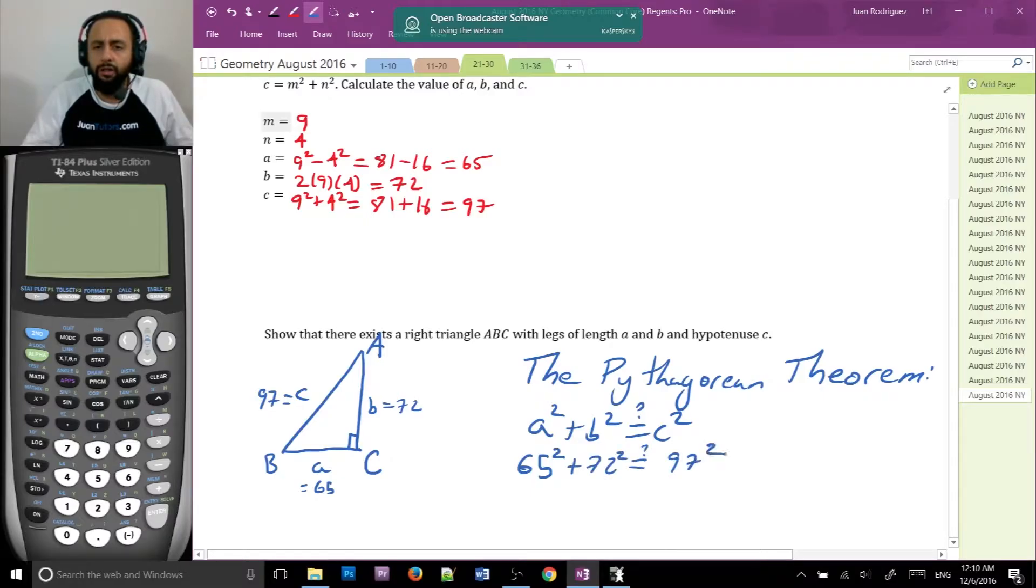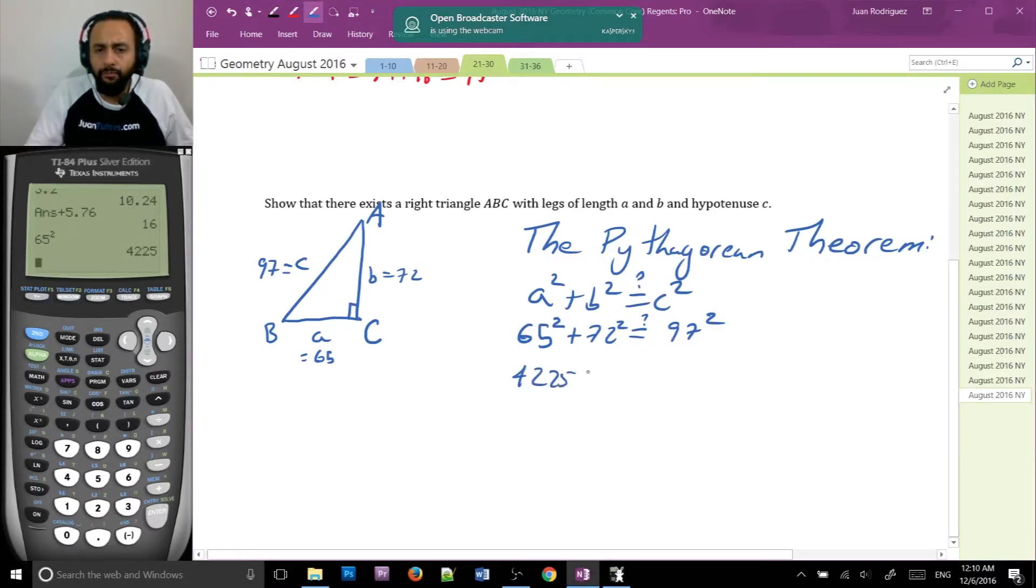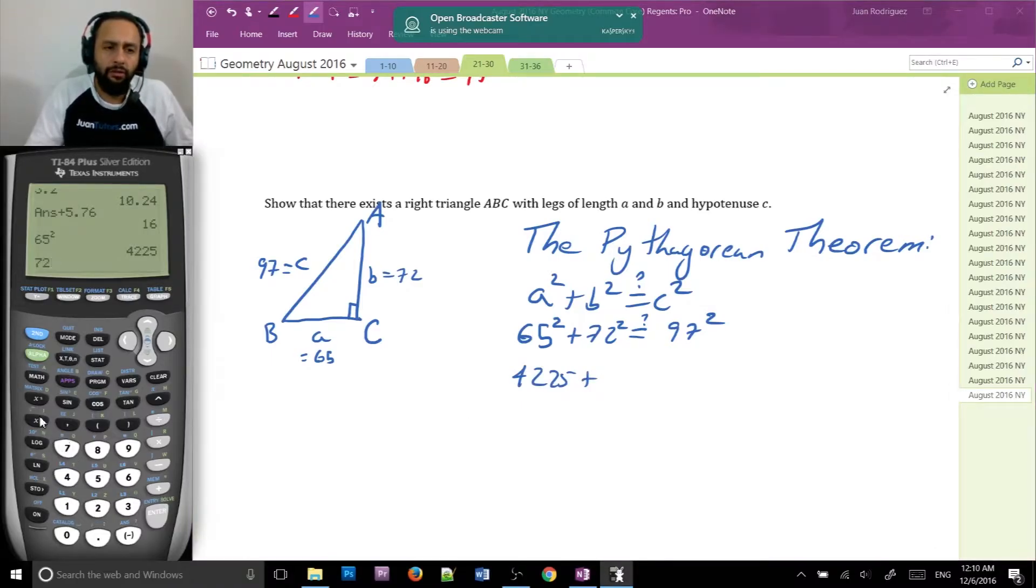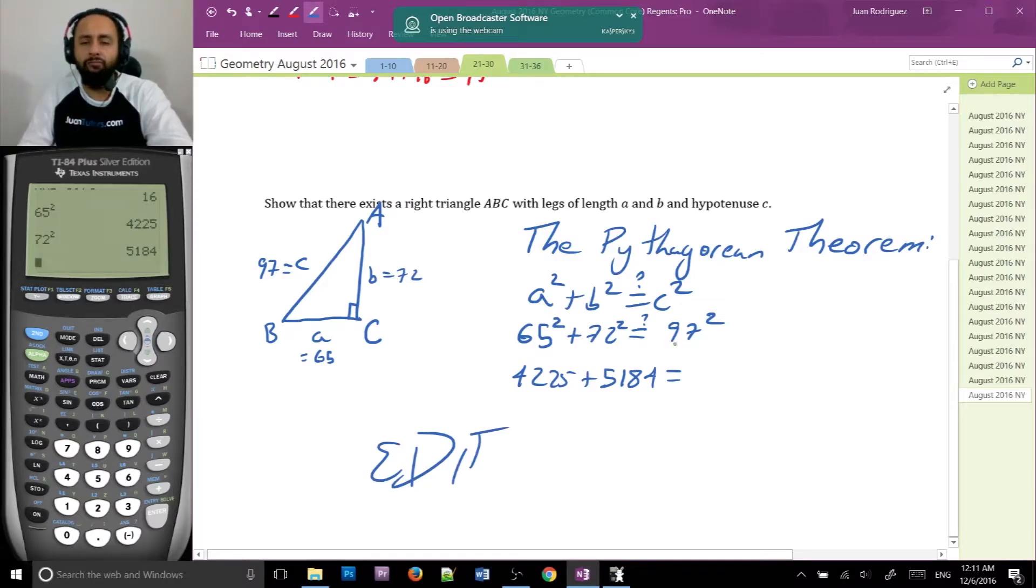So 65 squared plus 72 squared equals, with a question mark, 97 squared. Now, for this, I am going to use a calculator. I do know my perfect squares from 1 to 100, but 65 squared is 4225 plus 72 squared. Try to get it on your own. Let's see. 5184. Edit right after the 5184.